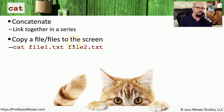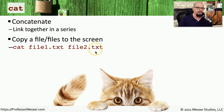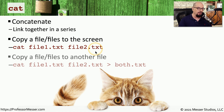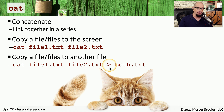For example, if you'd like to copy files to the screen, use the cat command and then the name of the files that you would like to display. You could also copy those files into a larger file — you would cat file number one, file number two, and then use the greater-than sign to pipe the contents of both of those files into a single file called both.